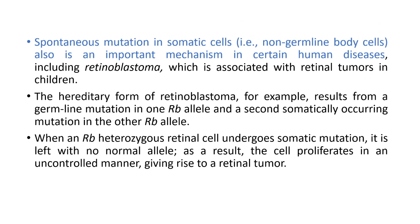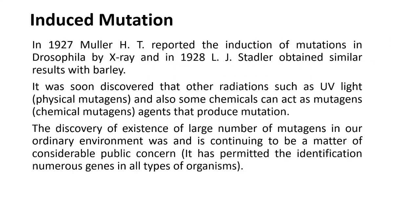Spontaneous mutations can also cause changes in somatic cells or non-germline body cells, which may result in certain human diseases, including retinoblastoma, associated with retinal tumours in children. The hereditary form of retinoblastoma results from a germline mutation in one RB allele and a second somatically occurring mutation in the other RB allele. When an RB-heterozygous retinal cell undergoes somatic mutation, it is left with no normal allele. As a result, the cell proliferates in an uncontrolled manner, giving rise to a retinal tumour — a cancer-like situation. Therefore, spontaneous mutations cause different types of diseases in humans.